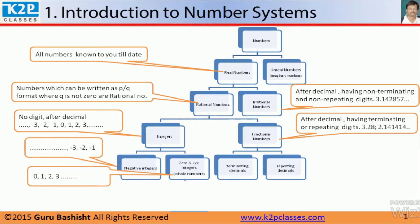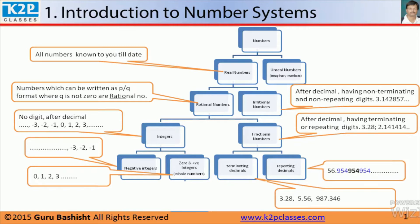So 0, 1, 2, 3 are called whole numbers. Terminating decimals are like 3.28, 5.56, 9.8, 7.346. And repeating decimals are like 56.95, or 9.5, 4 repeating — so 9.54 is repeating.